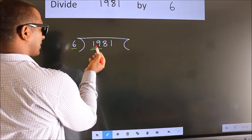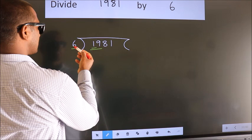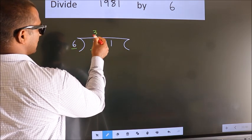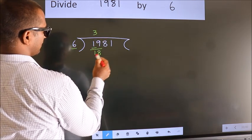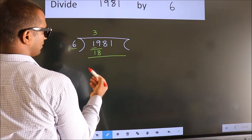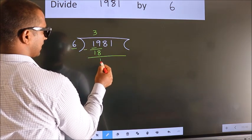19. A number close to 19 in 6 table is 6 threes, 18. Now we should subtract. We get 1.